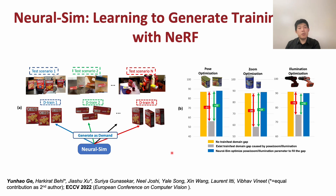This problem is also related to the train-test domain gap, where if train and test data has gaps caused by pose, zoom, or illumination, the performance will drop a lot — as shown comparing the yellow and gray bars. Our method tries to use optimization to fill this gap.